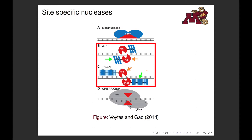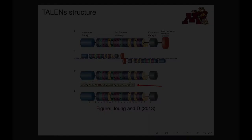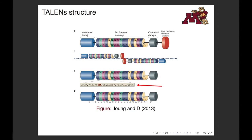This sequence-specific DNA binding domain is the principal difference between zinc finger nucleases and TALENs. In both systems, the DNA binding domain is fused to a FokI nuclease, indicated here by the orange arrow. The sequence-specific DNA binding domain of TALENs is composed of highly conserved repeats derived from TALs — proteins excreted by the bacteria Xanthomonas to regulate the transcription of rice genes.